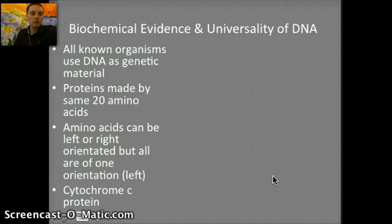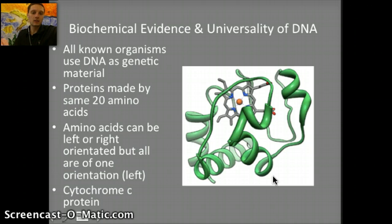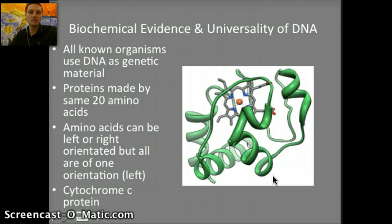Our fourth point is the cytochrome C protein — a protein about 100 to 104 amino acids long used in the electron transport chain. It's found in plants, animals, and unicellular organisms, and is really very complex. Because of its complexity, it's thought that the ability for it to evolve independently in all of these different groups is essentially impossible. It must have been passed from a common ancestor. So if a common ancestor is present for plants, animals, and unicellular organisms and passes that gene down throughout many generations into these different species, that suggests they are all derived from a common ancestor.